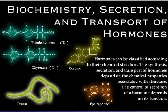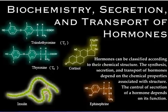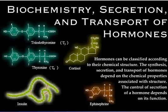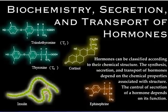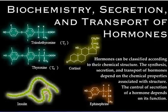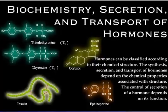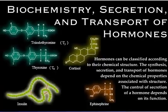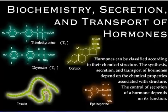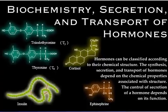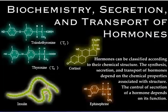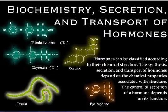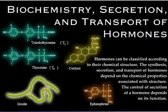Hormones can be classified according to their chemical structure. The synthesis, secretion, and transport of hormones depend on the chemical properties associated with structure. The control of secretion of a hormone depends on its function.